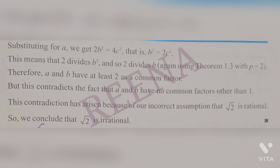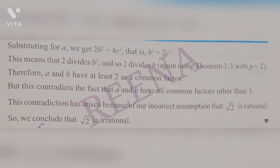This is a contradiction — we already stated that a and b have no common factor other than 1, but we found that 2 is a common factor. This contradiction arose because of our incorrect assumption. Therefore, we conclude that √2 is irrational. To summarize: if a prime number divides a square, it also divides the base, and we show 2 is a common factor of both a and b.